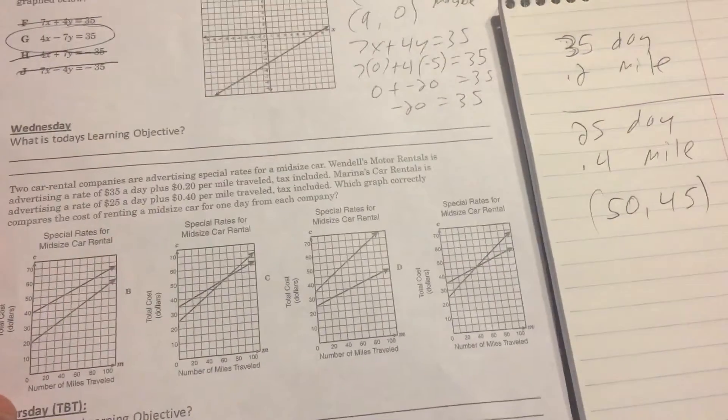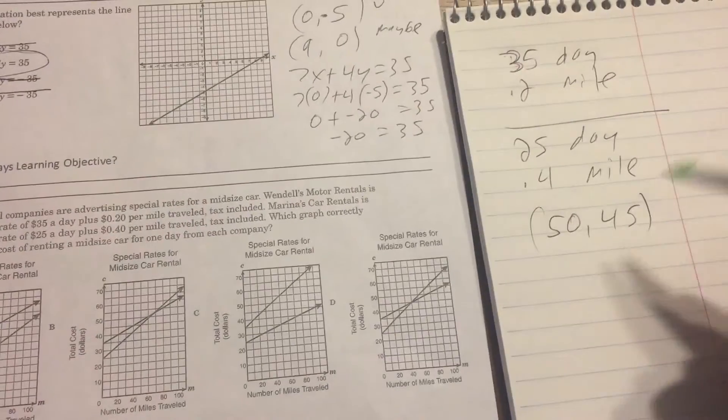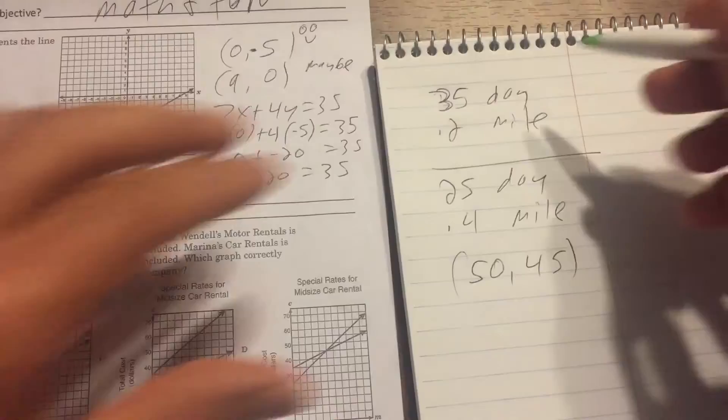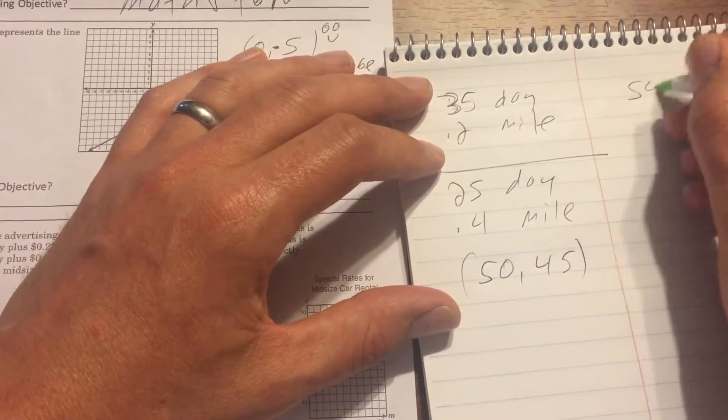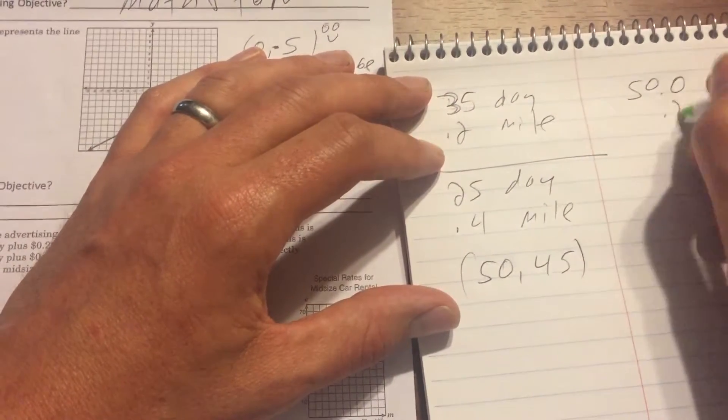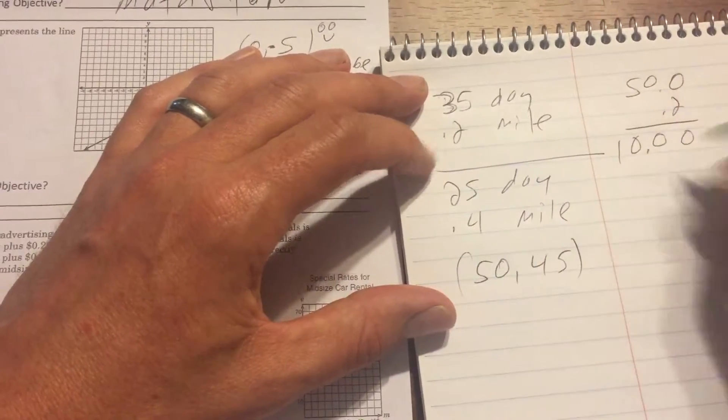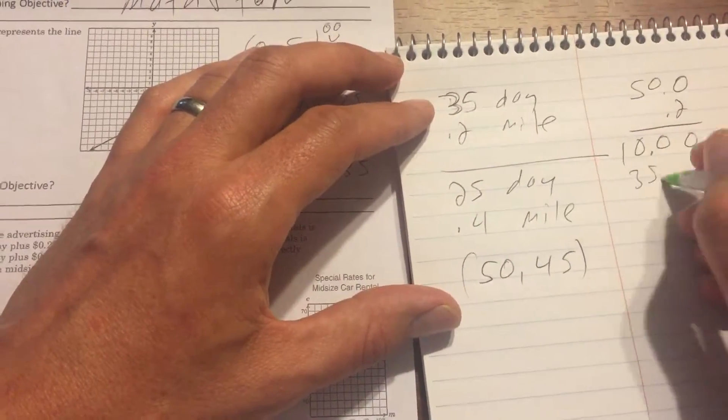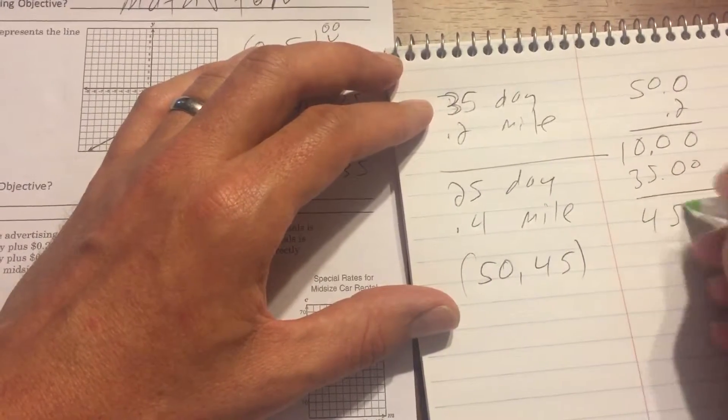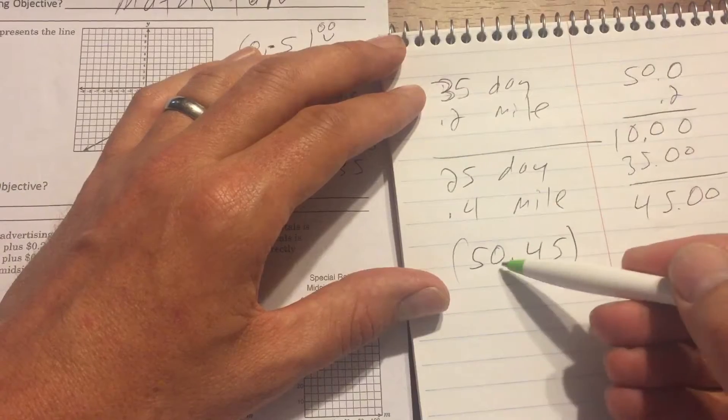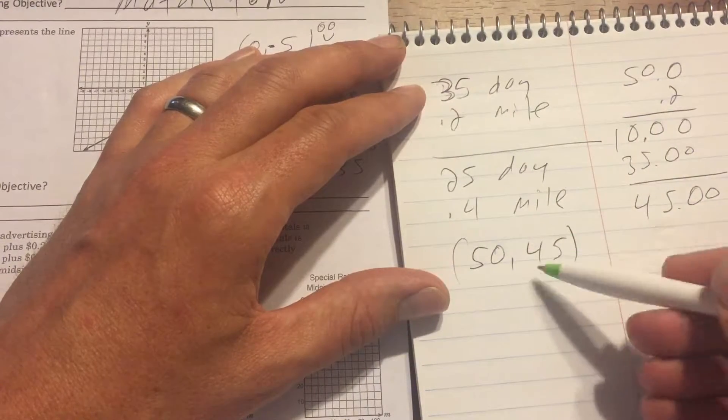So let's go and figure this out. If we look at 50 miles here, 50 miles is going to be 50 times 0.2 is, two decimal points, $10 plus $35 a day. It's going to be $45. So 50 miles gives us $45.